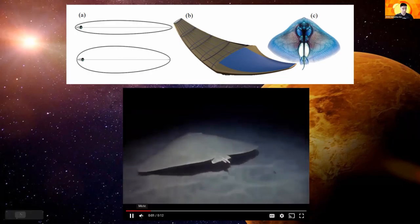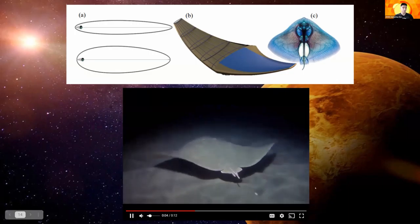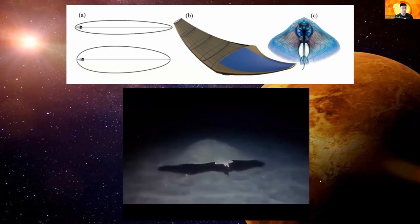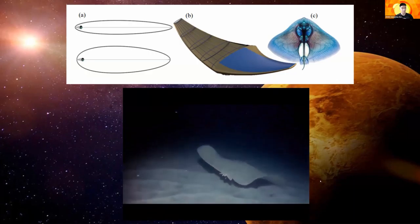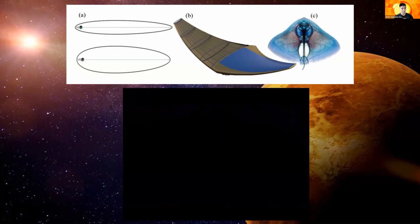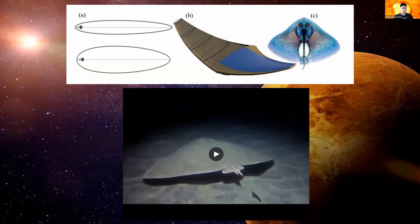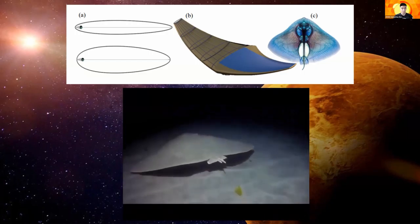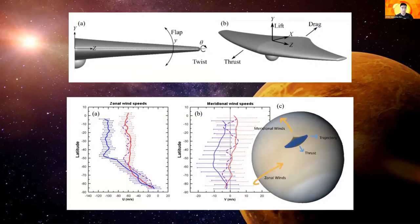Here's how the movement would actually look — just a stingray flapping its sides. Imagine that in the middle of the Venusian atmosphere. Here's a closer look at the design as a whole. We see the different types of forces — such as drag, thrust, and lift — acting on the actual vehicle. On the bottom, we also see a diagram of how it navigates the Venusian atmosphere and takes advantage of the different winds throughout Venus.